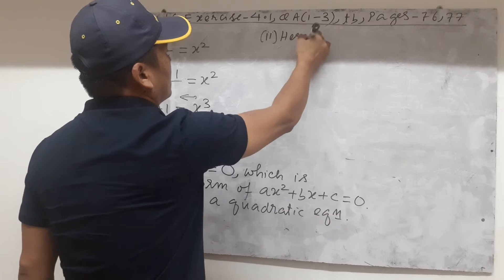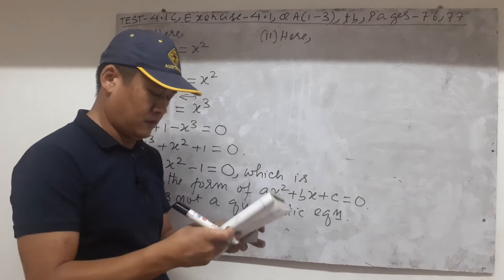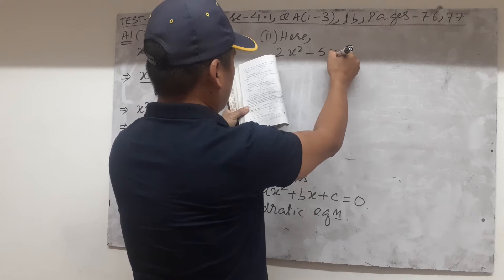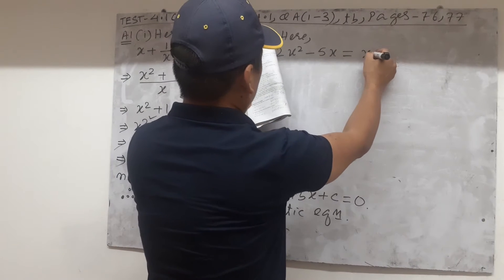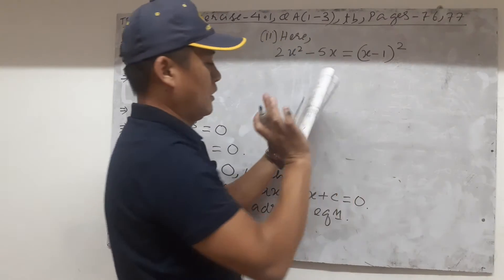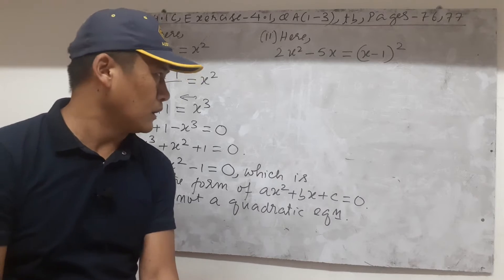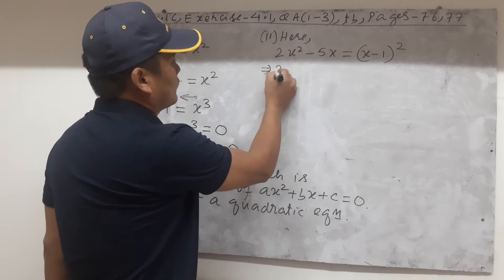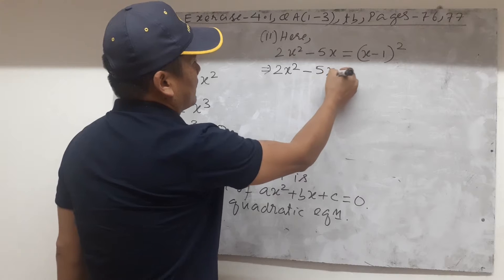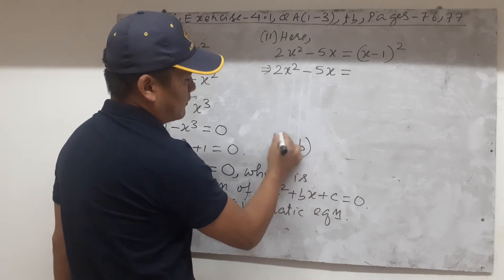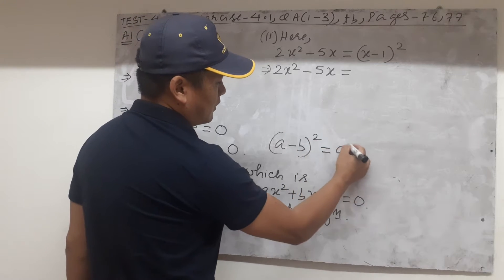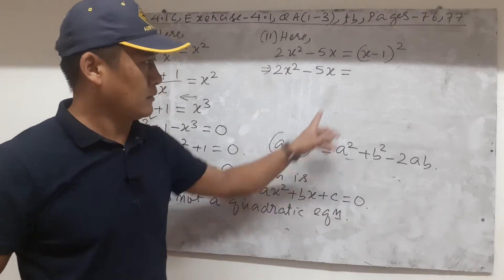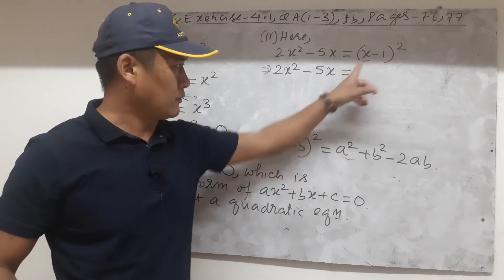For option 2, we are given 2x squared minus 5x equal to (x minus 1) whole squared. As I said a moment ago, you cannot really tell whether this is a quadratic equation in its present form, so we have to simplify it.